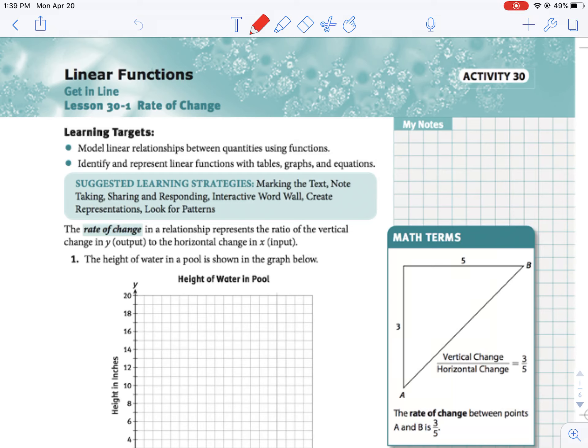All right, so today we're going to do section 30-1, which is rate of change. We've already talked a lot about rate of change being similar to slope, actually the same as slope in a line.